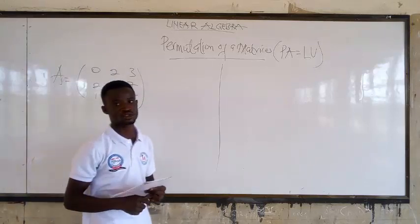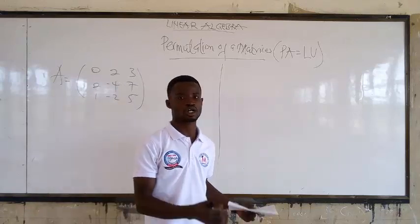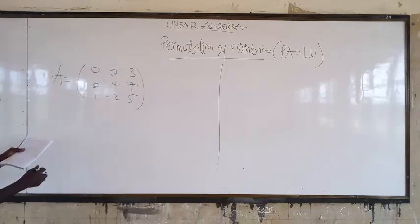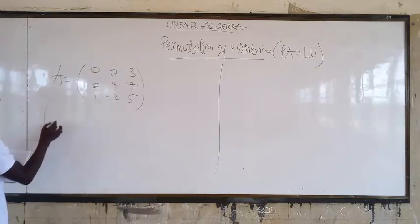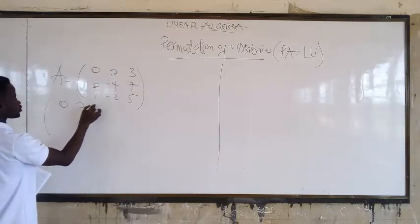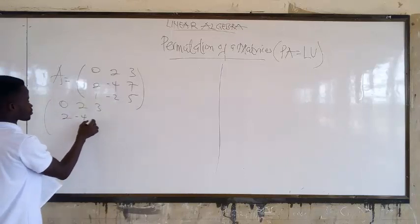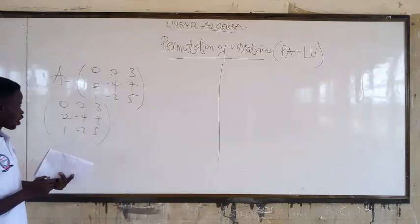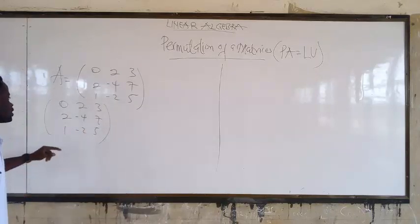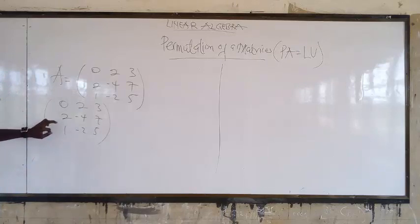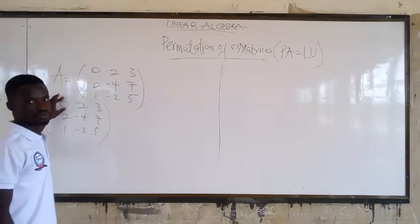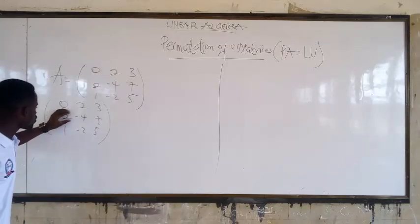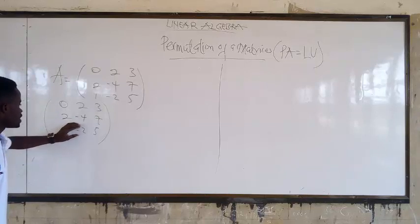The first thing to do is to obtain your upper triangular matrix. To obtain the upper triangular matrix, we want to achieve a form where the lower positions will be 0, 0, 0, 0.